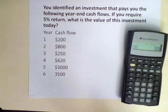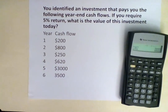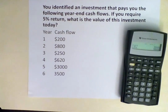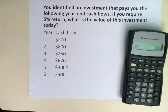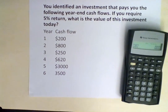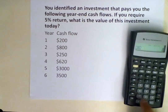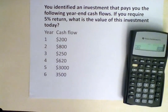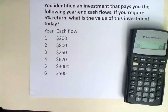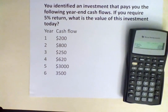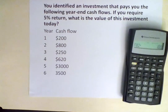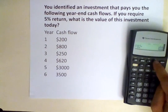Hit the down arrow and it leads you to C02. This is cash flow at time 2, and from our table it is $800, so we input 800. Hit enter. Down arrow — the frequency of the payment is just one time during the year, so we keep it at 1.